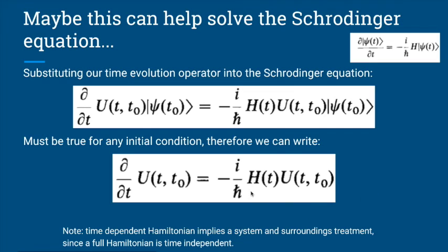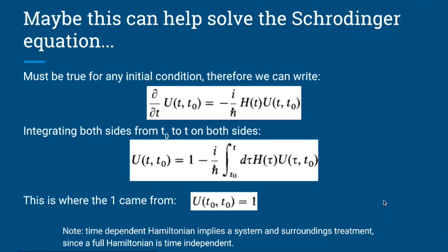It's important to note we have a time-dependent Hamiltonian. If your Hamiltonian depends on time, you've admitted you don't know everything about your system — and that's okay, because complex systems can be the more interesting ones. This could imply a system-bath or system-surroundings type treatment.